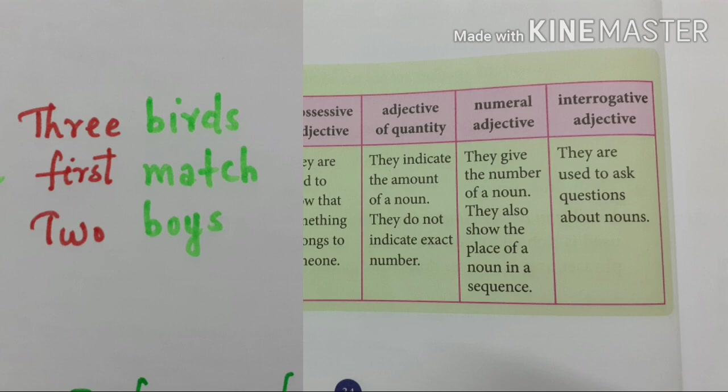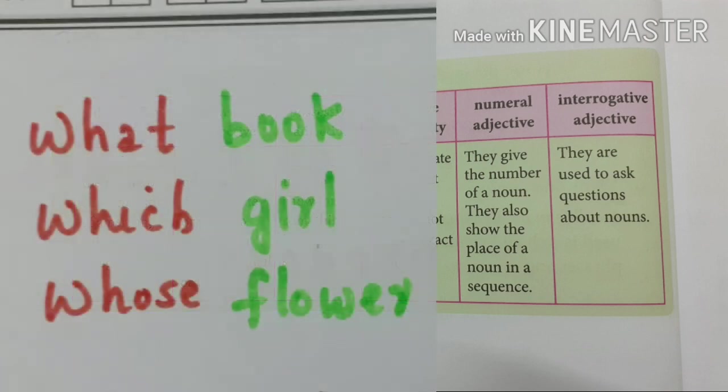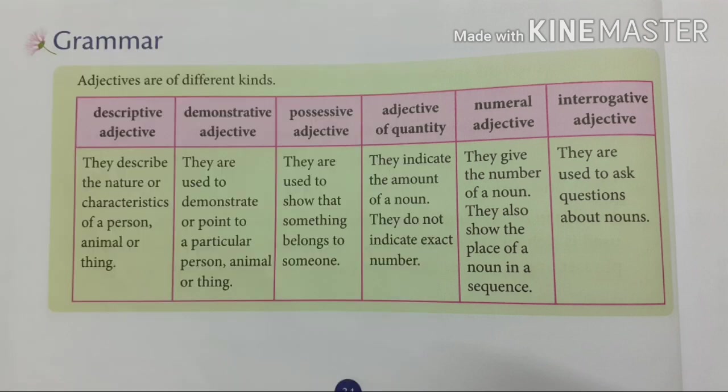What is an interrogative adjective? They are used to ask questions about the nouns. For example: what book? Which girl? Whose flower? These are some examples.